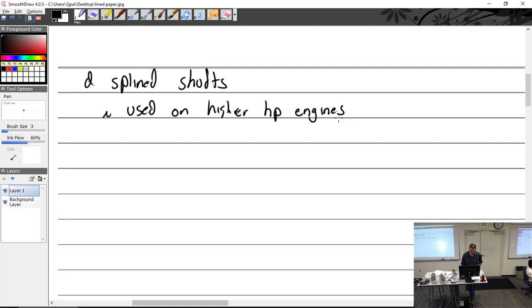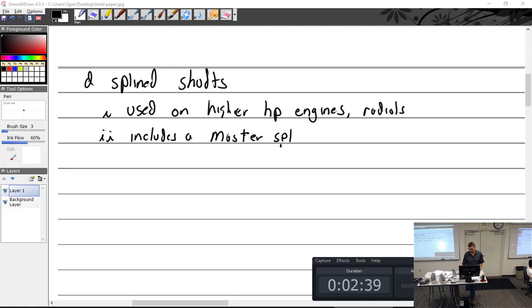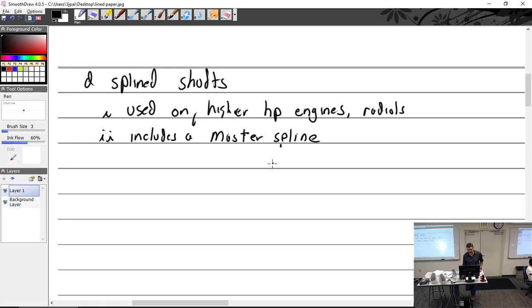Used on higher horsepower engines. There's some radial radials, definitely hydrogens, radials, and some other ones. Let's see, you will find on them a master spline. Often includes a master spline.